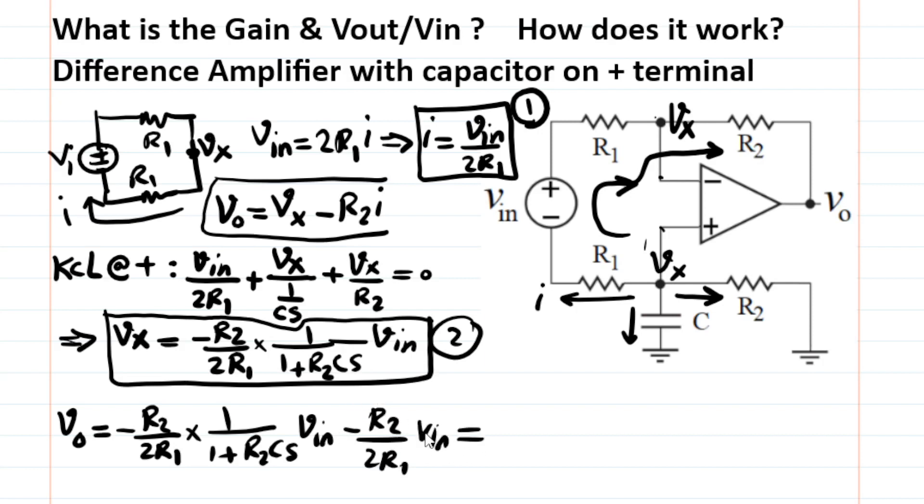I can factor out negative R2 times, divide by 2R1 times Vin from both components here. So let's do that. Negative R2 over 2R1 times Vin. And then what remains inside is 1 over 1 plus R2 Cs plus 1. And then when you simplify that, you get to 2 plus R2 Cs divided by 1 plus R2 Cs.